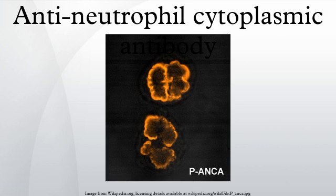Immunofluorescence on ethanol-fixed neutrophils is used to detect ANCA, although formalin-fixed neutrophils may be used to help differentiate ANCA patterns. ANCA can be divided into four patterns when visualized by IF.